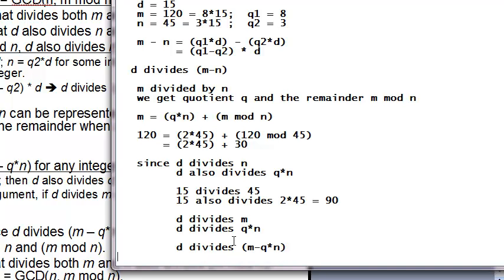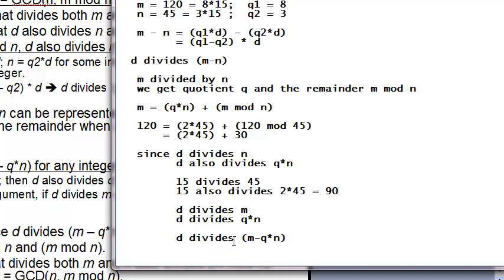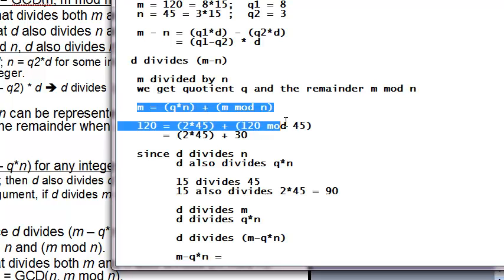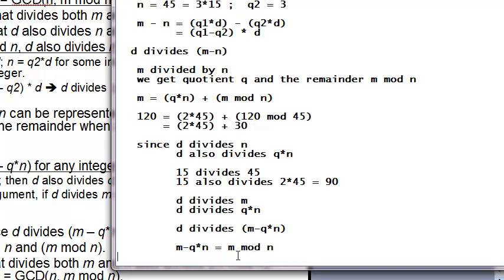So what is m minus q times n? From this, it's going to be m mod n. So since d divides m minus q times n, d divides m mod n.